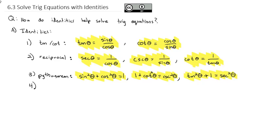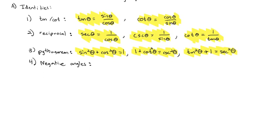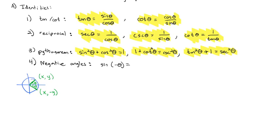I'm going to add a fourth set: the negative angle identities. You can figure these out by drawing a quick picture of the unit circle. If we have an angle theta giving point (x, y), then negative theta gives (x, -y). So sine of negative theta, since sine is the y-coordinate, gives a negative y-coordinate — that's negative sine of theta. The negative can come out.